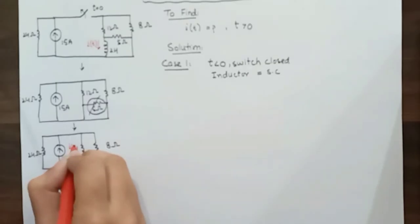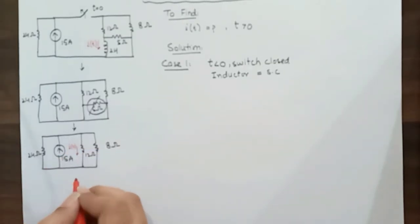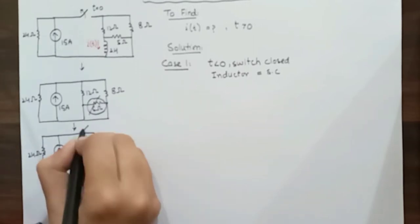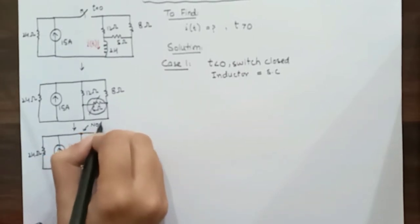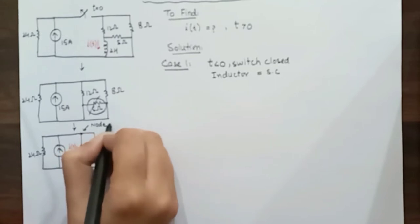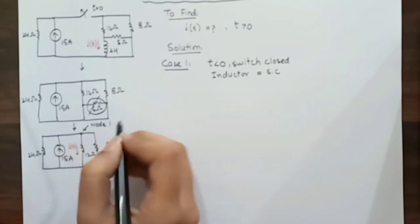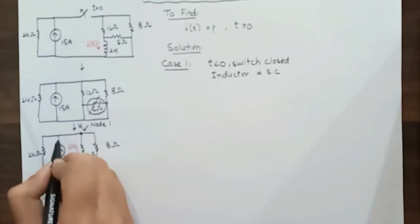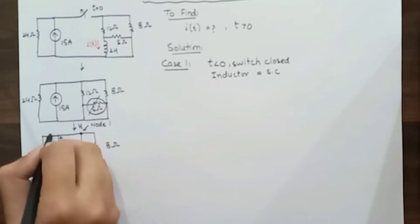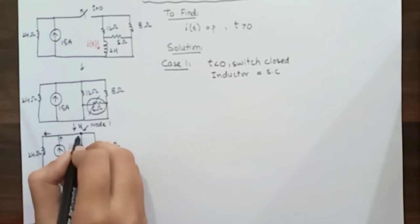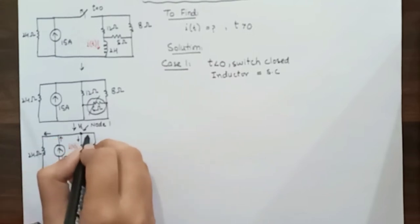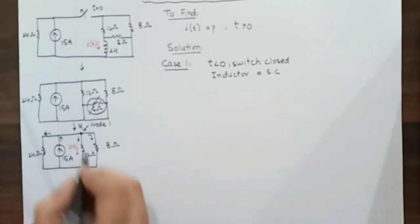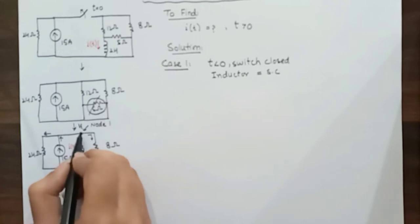We have to find the current I at t is equal to zero. So I(0) is the current that is flowing through the 12 ohm resistor. Let's take a node here and let the voltage at node 1 be V1. This 15 amperes current flows in this direction and goes here and also goes to this branch and to this 8 ohm resistor branch. So at this node the current entering is equal to current leaving.